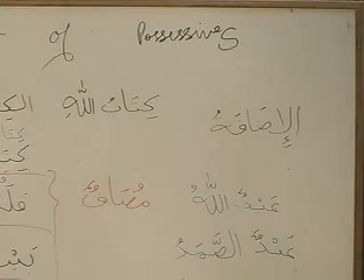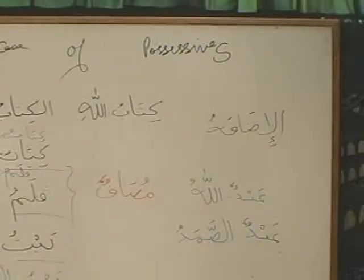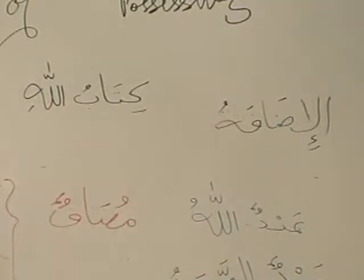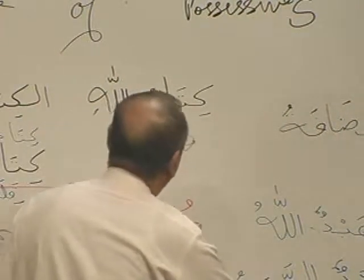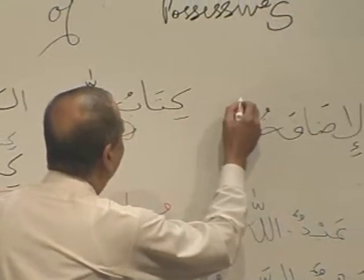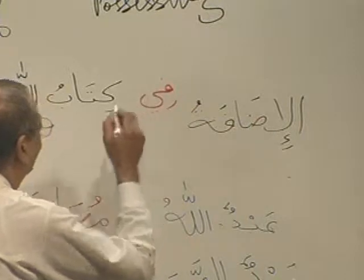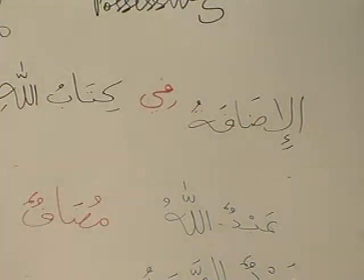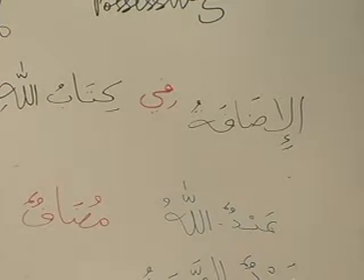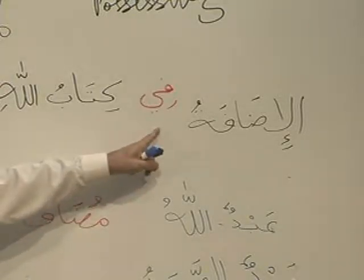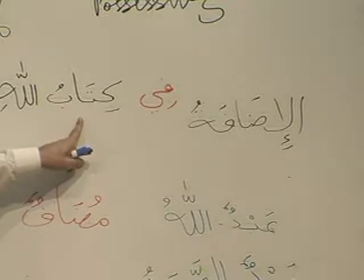Mudaf, Mudaf Ilaihi — Kitabullahi. Now I am coming and putting here the preposition Fi. Mashallah, see — Harfjar! You should shout at me: Harfjar, Ism Majroor! Harfjar came, we should have Ism Majroor. So what happened? Fi Kitabi — you know why it happened.